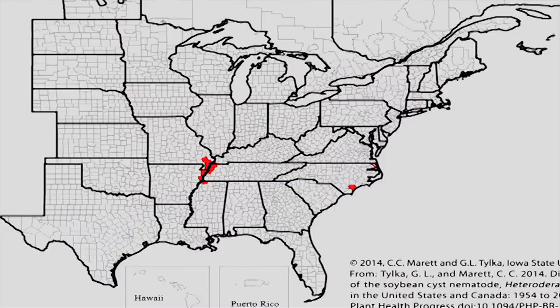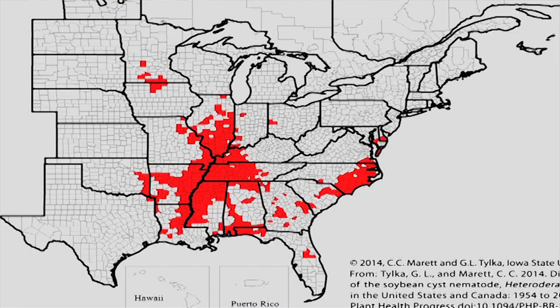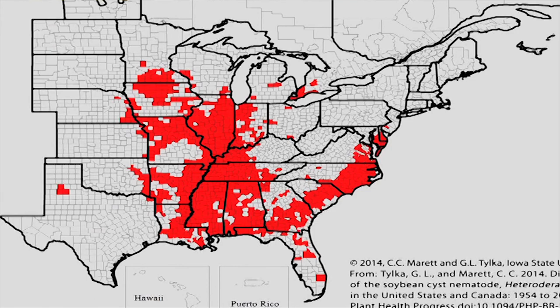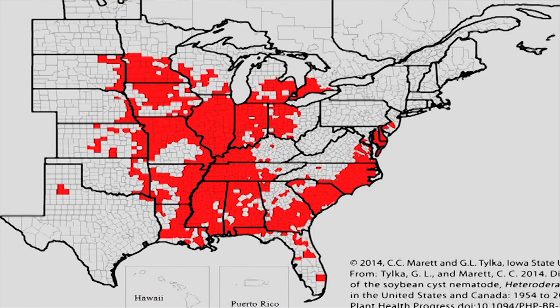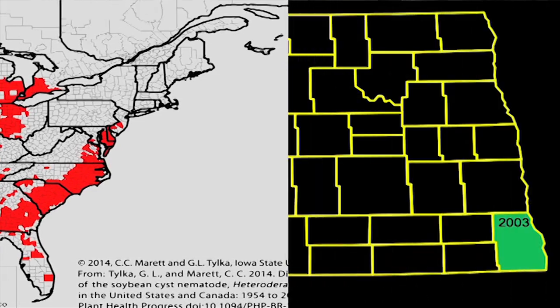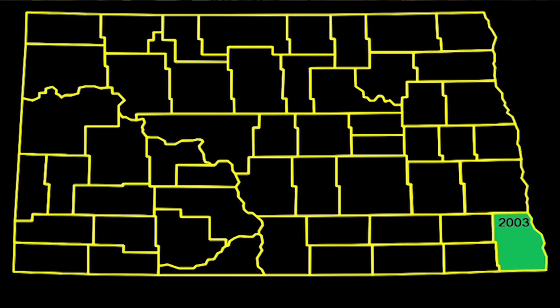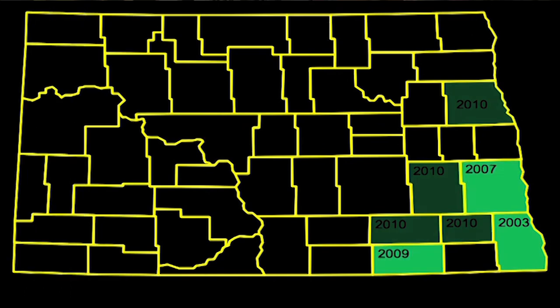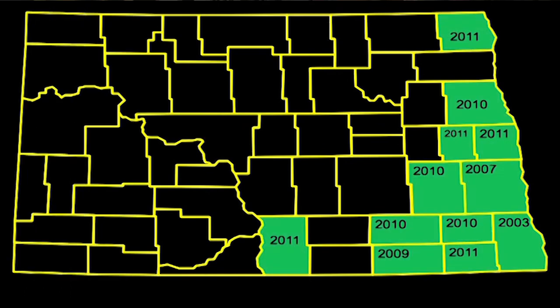A little background on this issue: this is an invasive pathogen. It's a parasitic worm and it first showed up in the U.S. about 70 years ago. It started in North Carolina and very quickly moved to the Great Plains, and over the course of the last half century it has consistently spread throughout the United States. It was first found in North Dakota in 2003 and we now know that it occurs in 19 different counties.